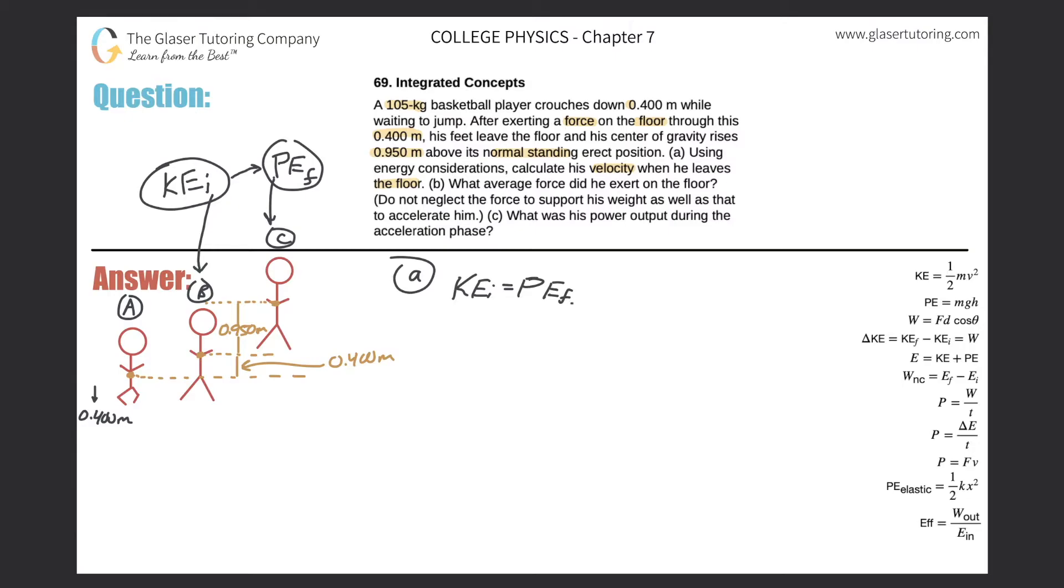Basically what we're saying mathematically is that the initial kinetic energy here will equal the final potential energy due to gravity. Kinetic energy is one half mv squared, potential energy is mgh. Since I'm talking about final, it's just the final height. Now we're looking for the velocity, so let's solve this equation for velocity.